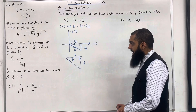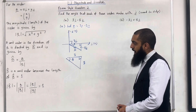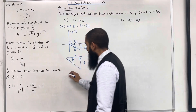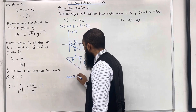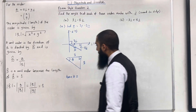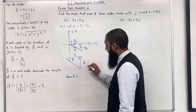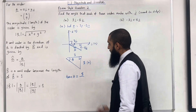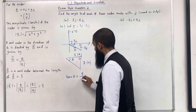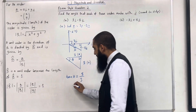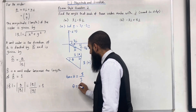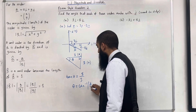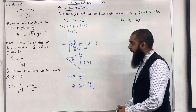From this triangle we can use SOHCAHTOA. We have the opposite and the adjacent. So tan θ = opposite over adjacent = 5 over 3. To work out θ, we take tan⁻¹(5/3).